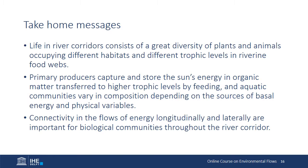So, what are the take-home messages from this lecture? We learned that life in river corridors consists of a great diversity of plants and animals occupying different habitats and different trophic levels in riverine food webs. We discussed algae, periphyton, macrophytes, and riparian plants; bacteria and fungi; mollusks, crustaceans, insects, fish, reptiles and amphibians, and mammals. We learned that primary producers capture and store the sun's energy in organic matter transferred to higher trophic levels by feeding, and that aquatic communities vary in composition depending upon the sources of basal energy and physical variables. This variation changes along a continuum extending from headwaters to the mouth of the river. Finally, we learned that connectivity in the flows of energy longitudinally and laterally are important for biological communities throughout the river corridor. We'll discuss the importance of this connectivity in more detail during the next lecture.